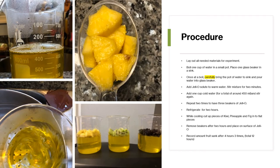For this experimental procedure, I first laid out all of the needed materials. Then I took one small pot and brought one cup of water to a boil. While the water was heating up, I put one 800 milliliter beaker in a sink. Once the water was at a boil, I carefully, with oven mitts and protective gear on, poured the boiling water into the 800 milliliter glass beaker. I then added the jello solute to the warm water and stirred for two minutes, then added one cup of cold water and stirred a bit longer.